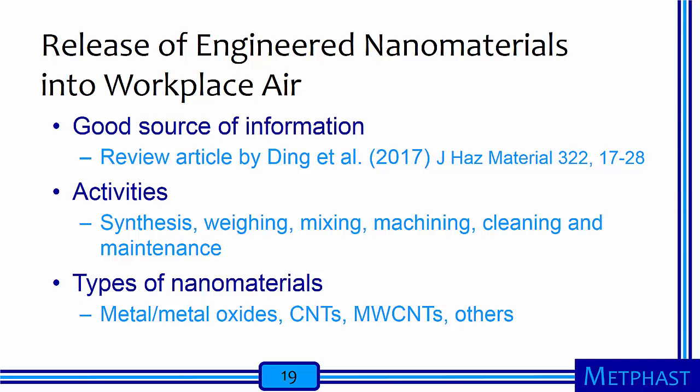A review article published by Ding et al. in the Journal of Hazardous Materials provides a good source of information specifically on the release of engineered nanomaterials into the workplace. They compile research conducted to evaluate airborne concentrations resulting from many different activities, including synthesis, weighing, mixing, machining, cleaning, and maintenance. They give examples for a variety of nanomaterial types, such as metals and metal oxides, carbon nanotubes, and other nanomaterials.